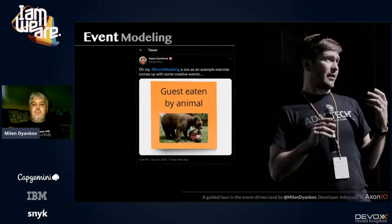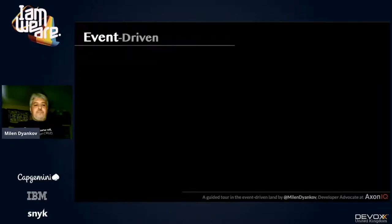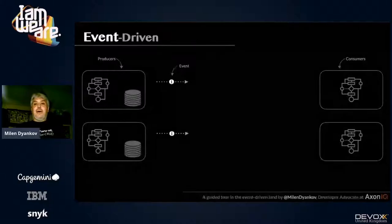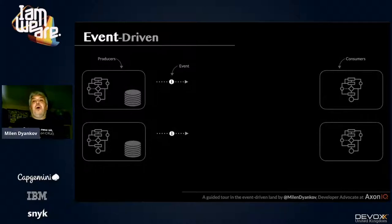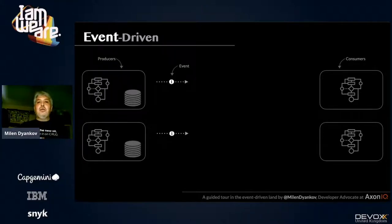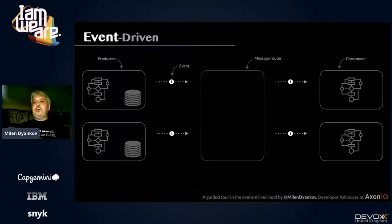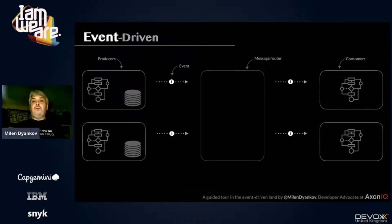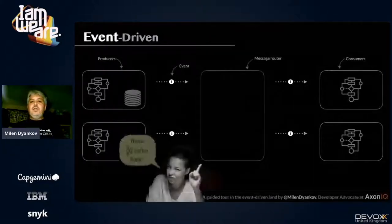So if we talk about events, what is 'event driven'? There are software components that produce events and software components that consume events. Think of these as roles, not actual software units — a single component can play both producer and consumer roles. Producers produce events, and then there's something responsible for routing those events to consumers. I call it a message router, not an event router, for a reason we'll discuss later.